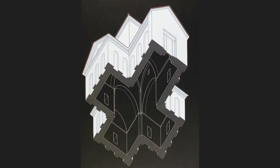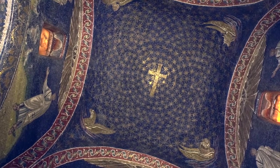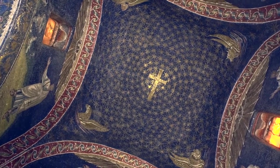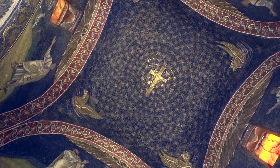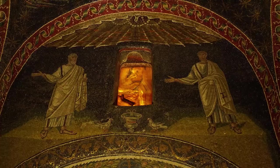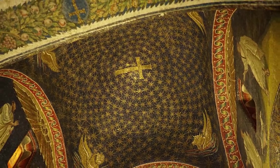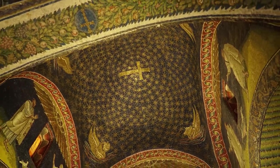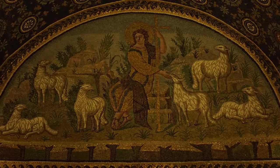In the Mausoleum of Galla Placidia, originally linked to the portico of the Church of Santa Croce, the central space is characterized by a cruciform plan. The arm where the entrance is located is slightly longer than the other three. The central part of the building is covered by a dome on pendentives and the forearms by barrel vaults. Inside, above the cornice of the vaults, all surfaces are decorated with mosaics whose design is influenced by the models of Constantinople.